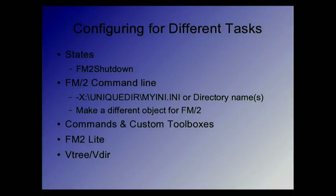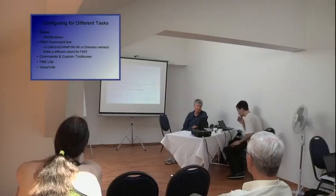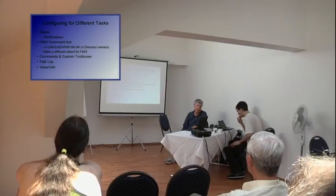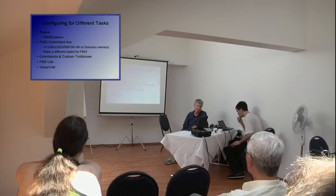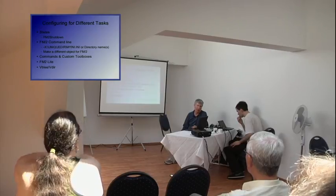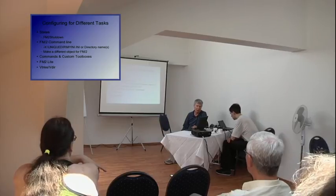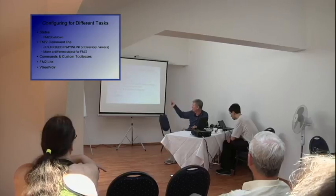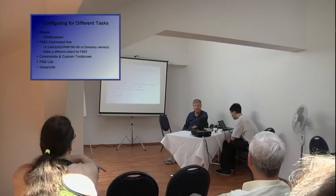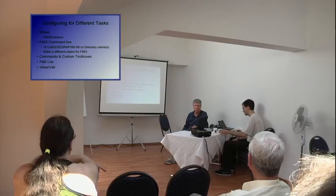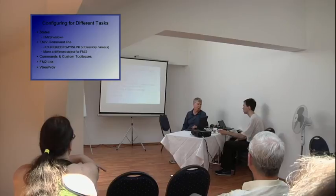FM2 can be configured for different tasks using the command line with the dash-X unique-directory and INI file option. You can have different FM2 INI files by using that command-line switch. There are several hundred INI entries that are part of FM2's configuration, so you could have three or four completely different configurations for different purposes - just put the INI path in the object parameters line and double-click.